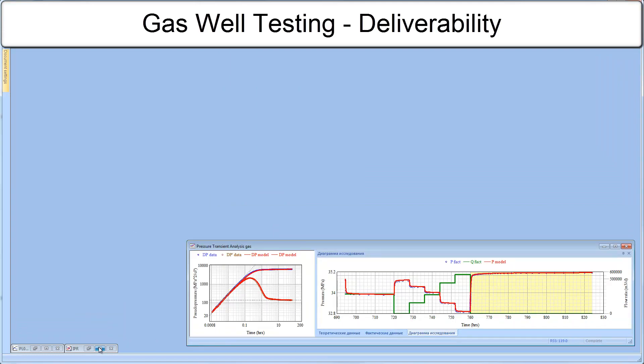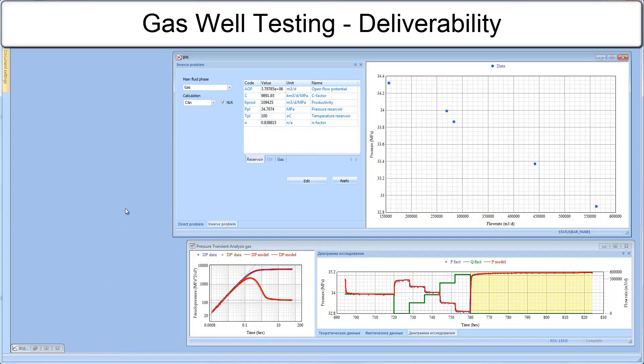On the same data we can do deliverability test analysis. There have been presented a few methods of interpretation of deliverability tests proposed by different authors. An empirical relationship between flow rates and the stabilized flowing pressure is called CNN analysis. To solve it you need to know PI, initial pressure. But with the use of non-linear regression we find the best fit of the model to match the real data.